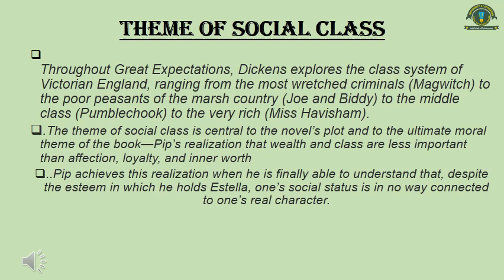Throughout Great Expectations, Dickens explores the class system of Victorian England, ranging from the most hardened criminal Magwitch, to the poor peasants of the marsh country Joe and Biddy, to the middle-class Pumblechook, to the very rich Mrs. Havisham. The theme of social class is central to the novel's plot and its ultimate moral theme: Pip's realization that wealth and class are less important than affection, loyalty, and inner worth. Pip achieves this realization when he finally understands that one's social status is in no way connected to one's real character.